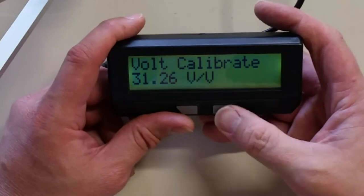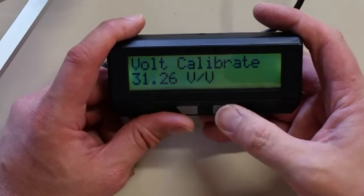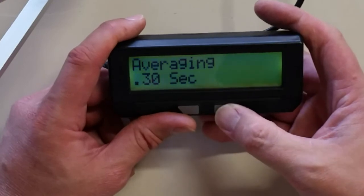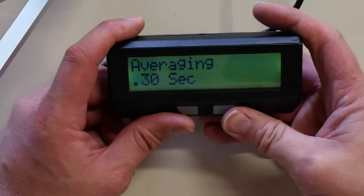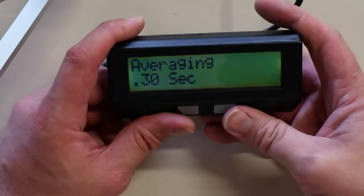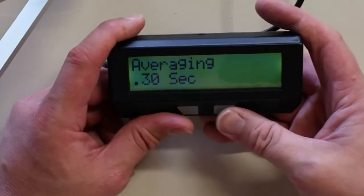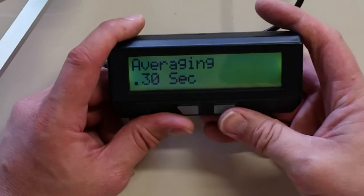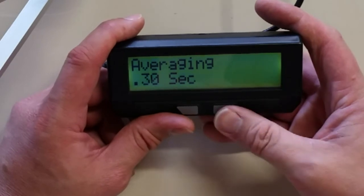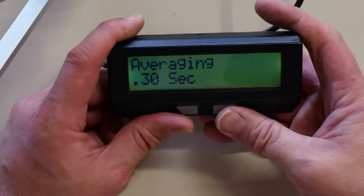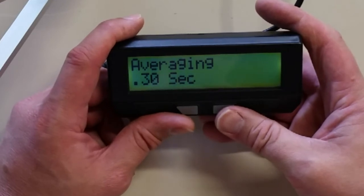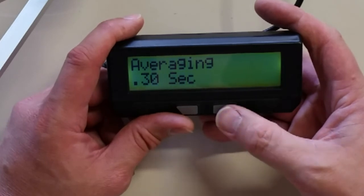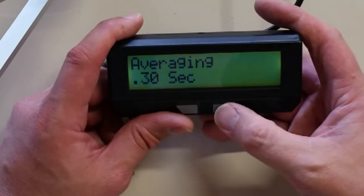Voltage calibrate. I really don't usually change this. And averaging 0.3 seconds. This is just taking, instead of taking instantaneous measurements and your cycle analyst kind of jumping around all over the place, it takes 0.3 second average for whatever your power voltage and current usage. So I usually leave this where it is.